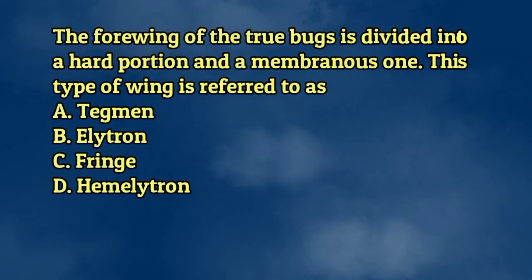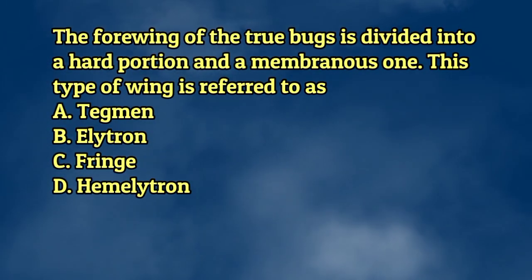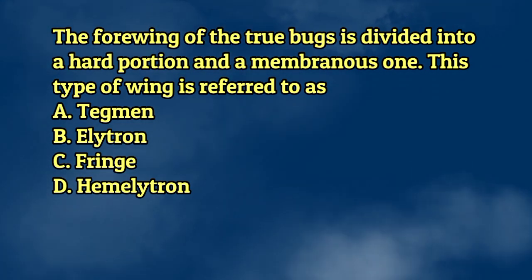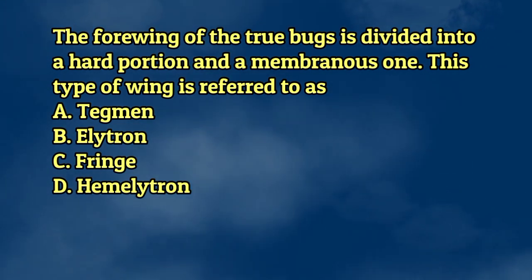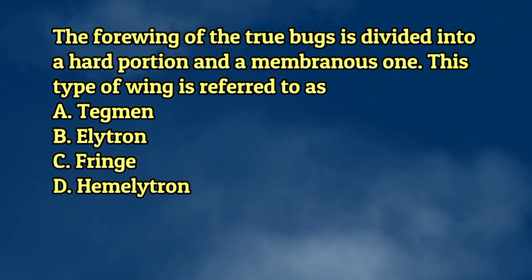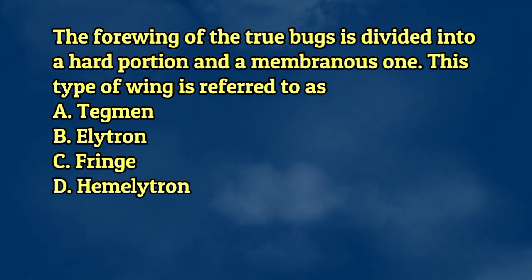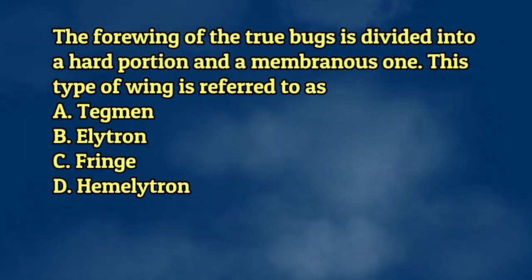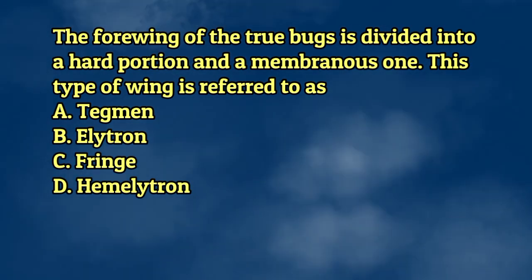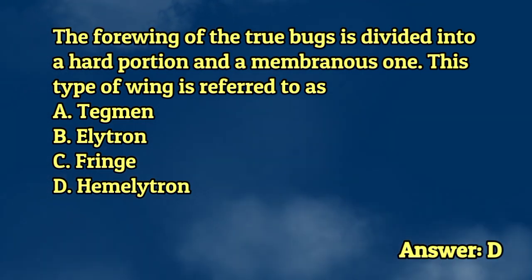The forewing of the true bugs is divided into a hard portion and a membranous one. This type of wing is referred to as. A. Tegmen. B. Elytron. C. Fringe. D. Hemelytron. The answer is letter D.